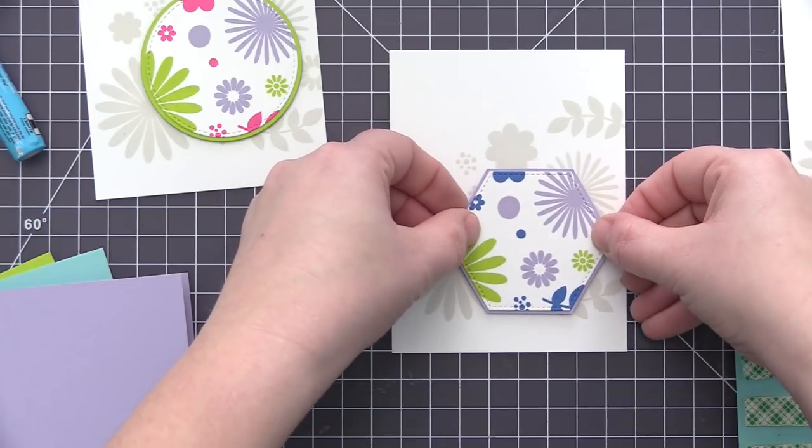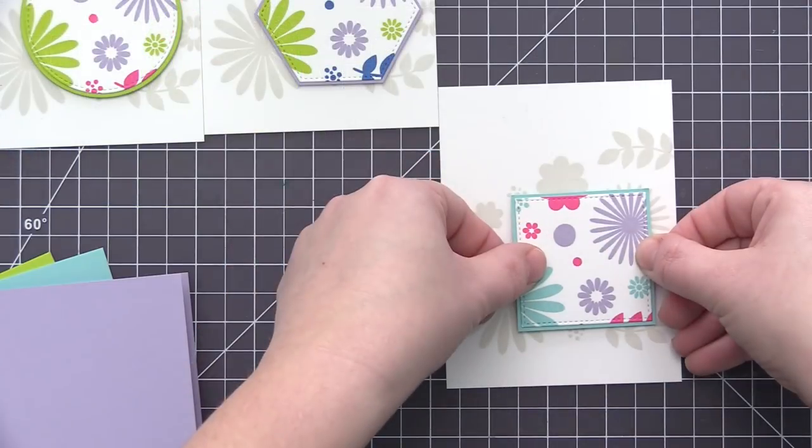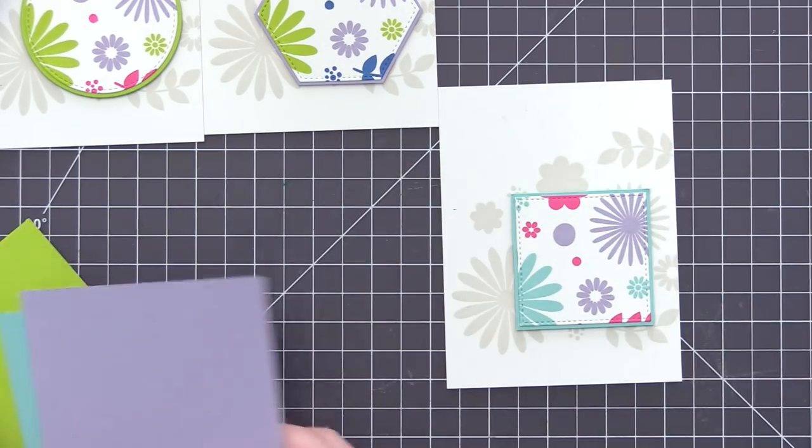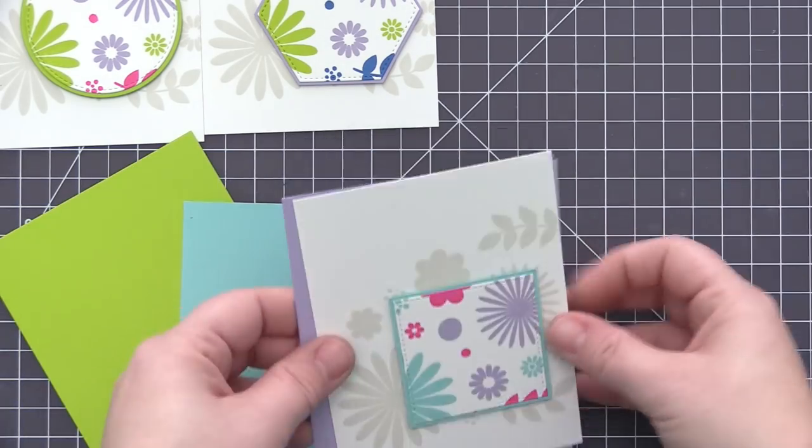So I'm just going to go ahead and add on the hexagon and the square. Once again I'm using the same foam adhesive to add a little bit of dimension. And then once I have these little panels on here, the main panel is finished and we can add these to a card base.